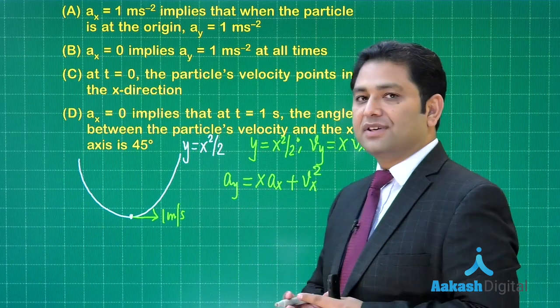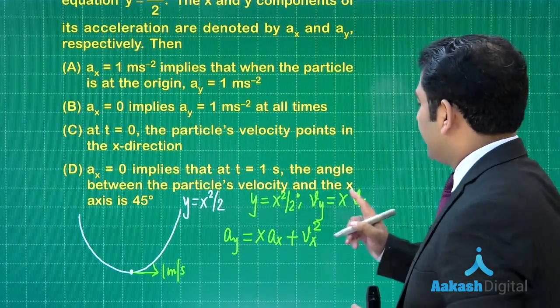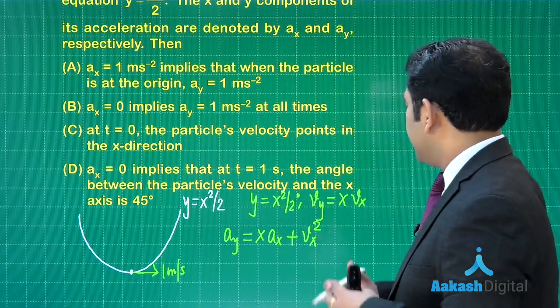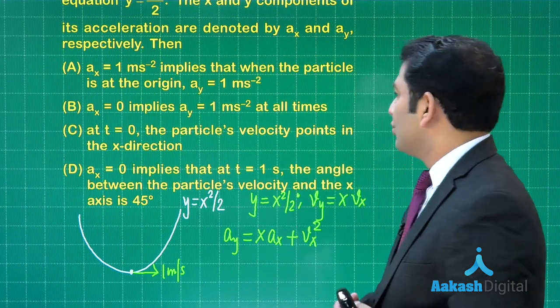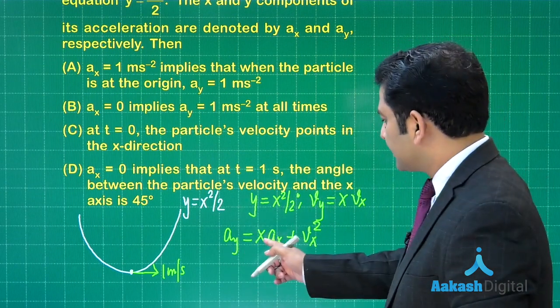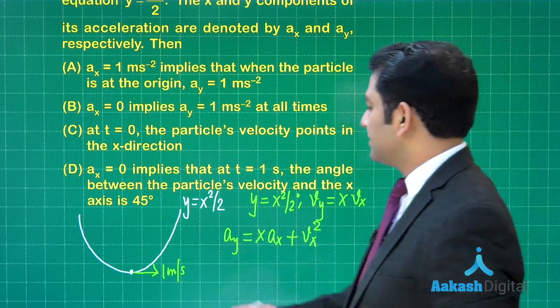This relates ax and ay. The first option says ax is 1, which implies that when the particle is at origin, ay would be 1 meter per second squared. That's correct because x is zero, so ay equals vx, and vx is 1 meter per second. So the first option is correct.